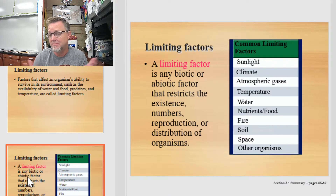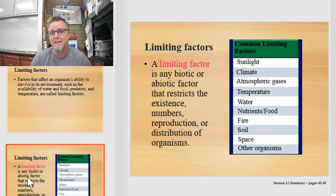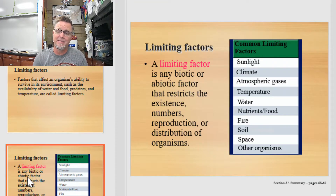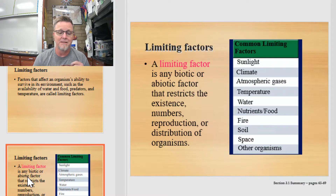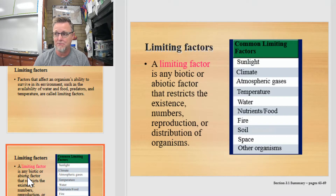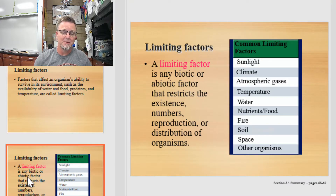Limiting factors can also be interactions with other species. Maybe you're stuck living somewhere where there's lots of things trying to eat you — that's probably not a good place to hang out. You've got two choices: you either reproduce like crazy and deal with the fact that the majority of your offspring or even yourself are going to become dinner for a predator, or you leave if you're an animal. If you're a plant, you don't have a choice — you just try to eke out survival the best you can. At the end of the day, these limiting factors will definitely restrict your existence, determine whether you can stay there, how many individuals will ultimately exist there, how fast you need to reproduce to prevent going extinct, and your distribution — like you don't want to live right next to your predators.